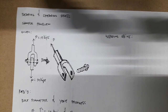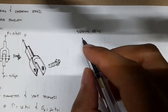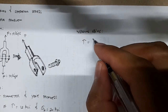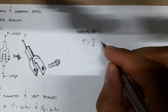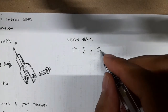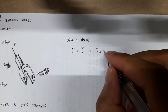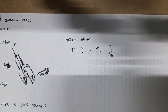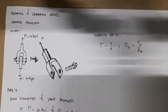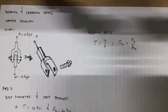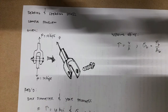Our working equations here: for shear stress we have tau equals V over A, and for bearing stress we have sigma_b equals P_b over A_b. We'll find the diameter first.